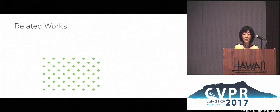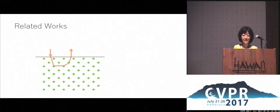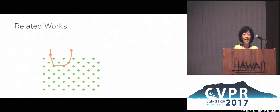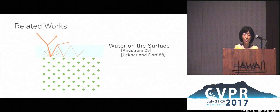Past work on wet surface appearance modelling mainly focused on surface darkening. For dry surfaces, appearance is determined by light interaction with material particles and air. For wet surfaces, some researchers have studied the special case when a thin film of water is formed on the surface.